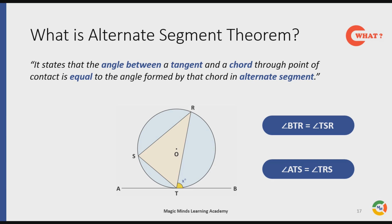So if angle BTR is x degrees, angle TSR will also be x degrees. And if angle ATS is y degrees, angle TRS will also be y degrees. Okay, so this was the what part of Alternate Segment Theorem.